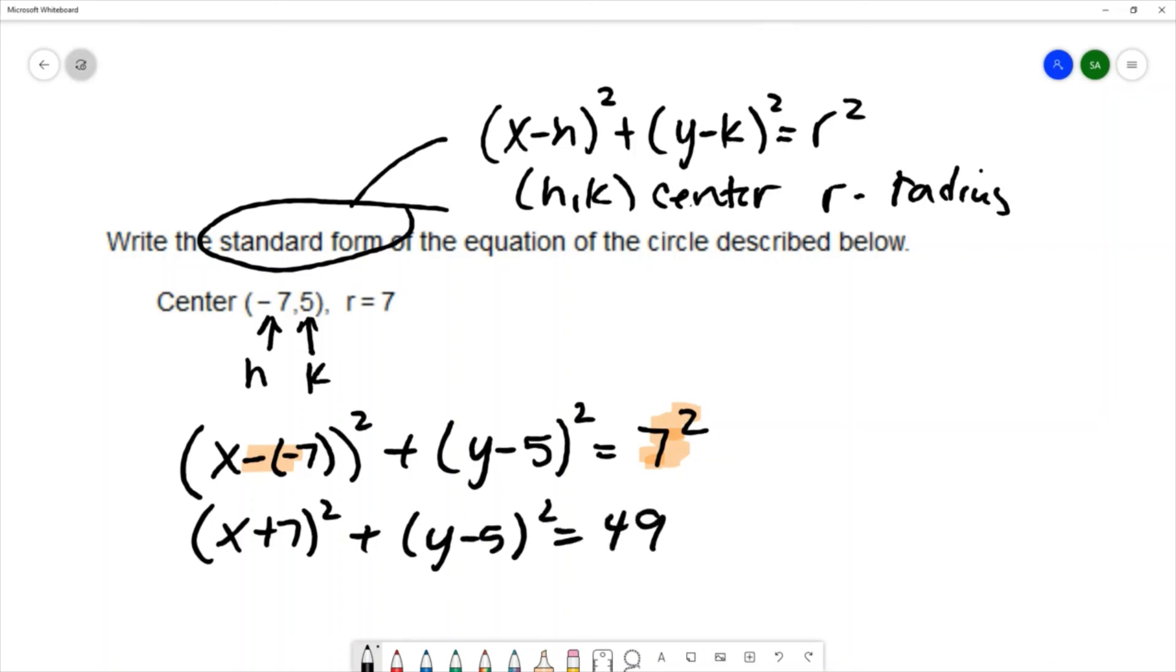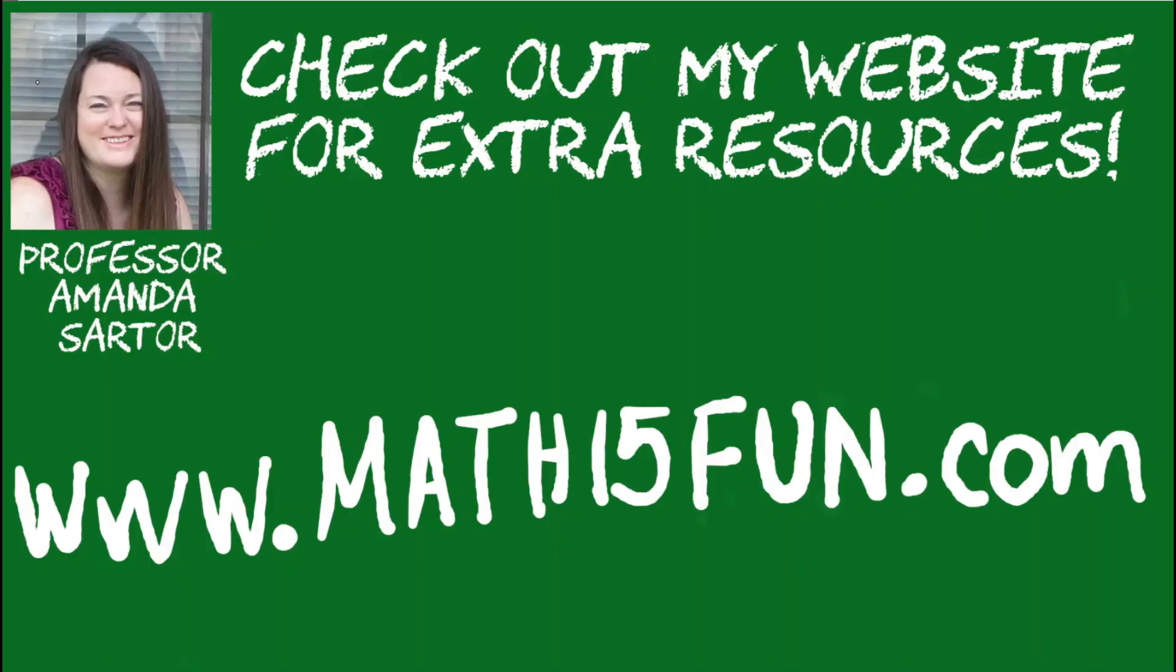So this is the equation of a circle with center negative 7, 5, and a radius of 7. Thank you for checking out my videos. Have a great day.